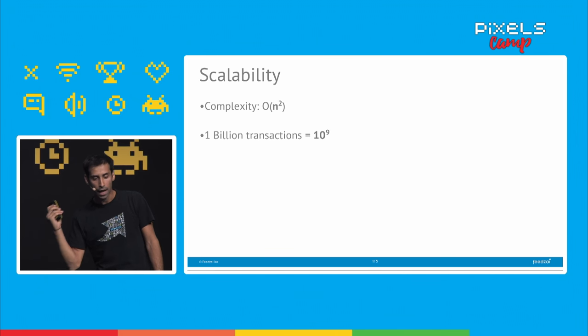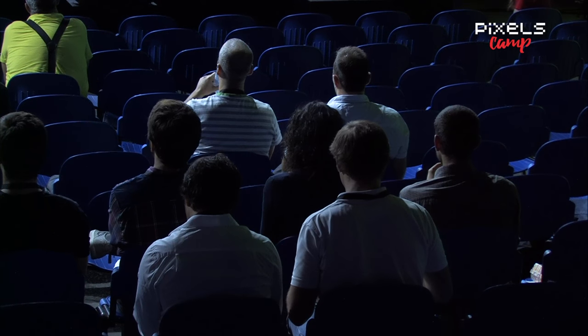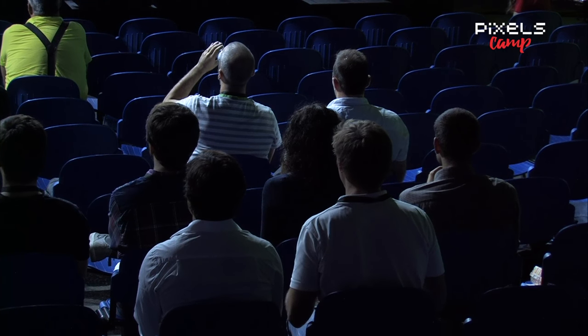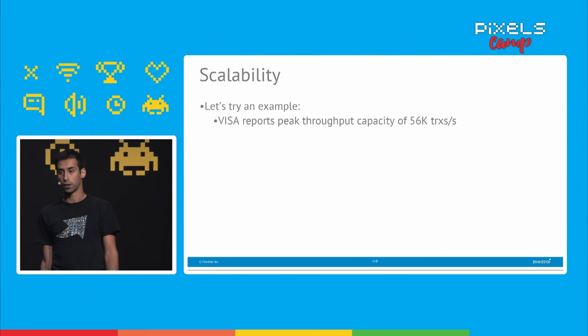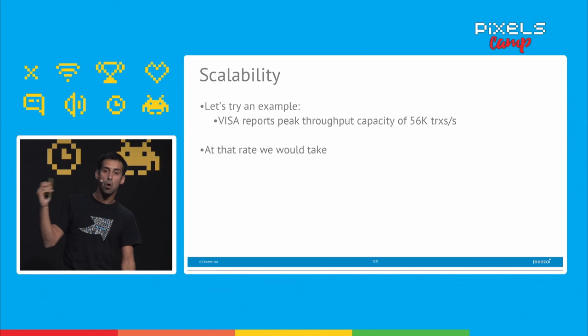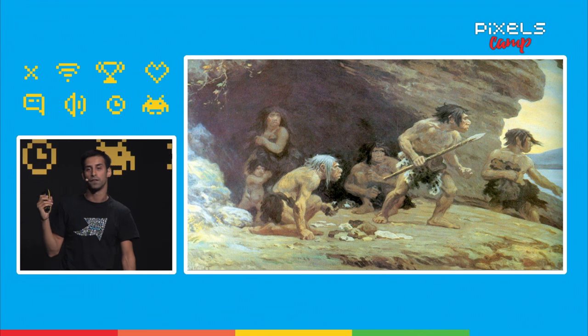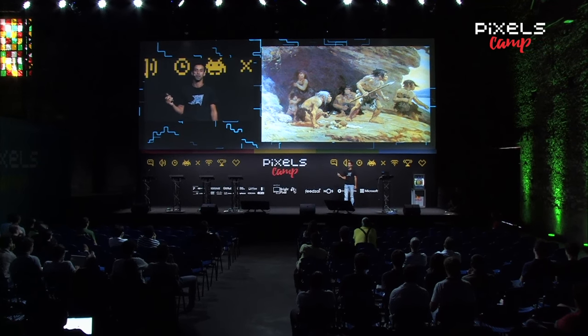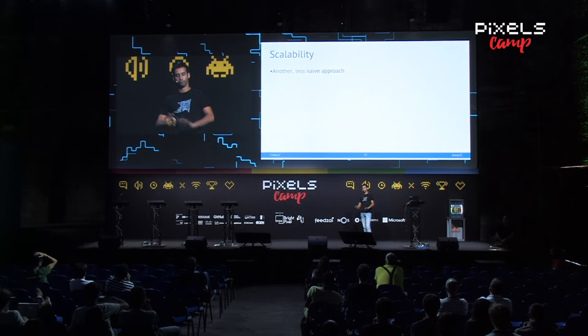At this complexity, Visa reports a peak throughput capacity of 56,000 transactions per second. At that rate, we would take more than 500,000 years to complete. To put this in other words: if you had started computing when the Neanderthals were first appearing, we would still be computing — and they went extinct first. So that's a lot of time. We need a less naive approach.